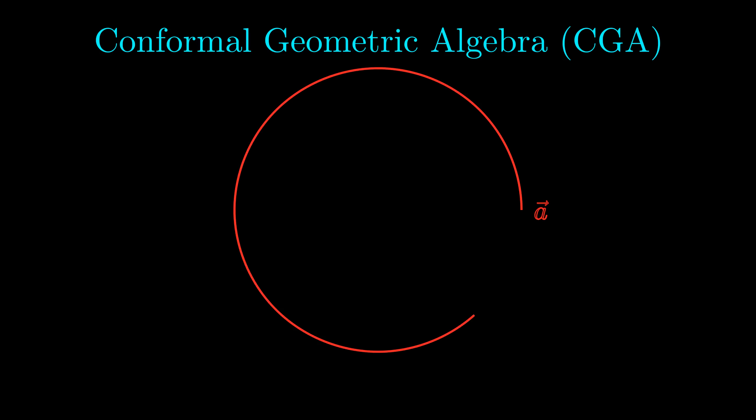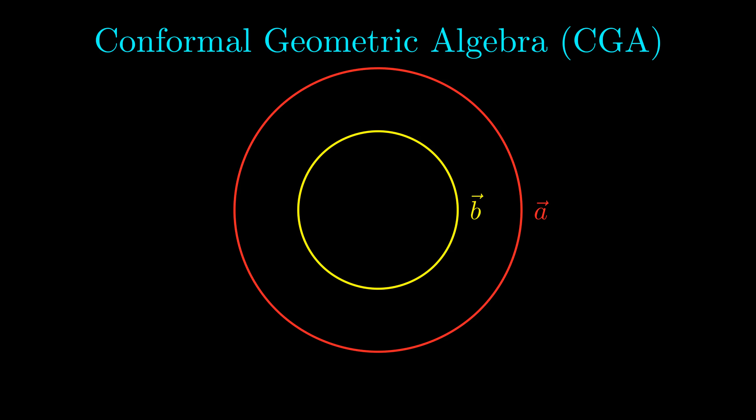As one final example of this way of thinking about the geometric product, let's briefly look at conformal geometric algebra (CGA). I'll be honest — I know very little about CGA and am planning to learn more eventually. However, even with limited knowledge, we can figure out a lot about how CGA works by doing the same thing we did earlier in the video. In CGA, vectors can be circles. I'm purposely not going to explain how circles are represented as a linear combination. The question I want to answer is: how do we think about the product of two vectors, in this case two circles?